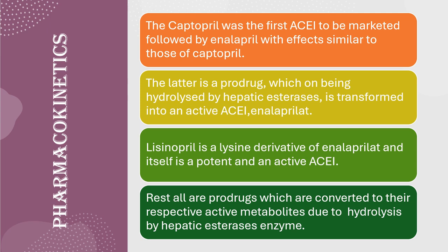Captopril was the first ACE inhibitor to be marketed, followed by enalapril, which has a similar effect. Later prodrugs were developed which, on being hydrolyzed by hepatic esterase, are transformed into active ACE inhibitors like enalaprilate. Lisinopril is a lysine derivative of enalaprilate and is itself a potent and active ACE inhibitor. The rest of the drugs are prodrugs which are converted to their respective active metabolites by hydrolysis via hepatic esterase.